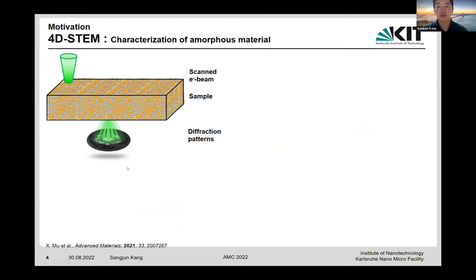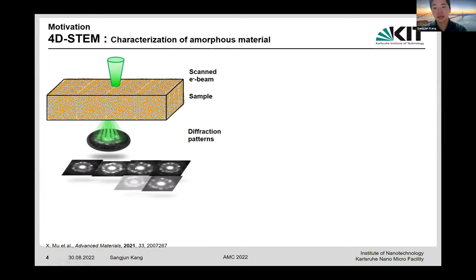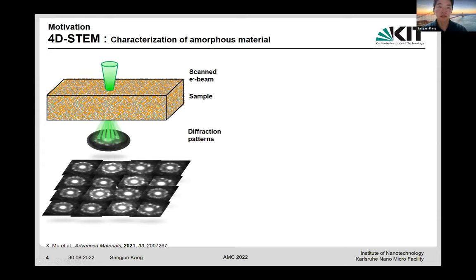We developed a four-dimensional STEM method to quantify the local structure of nanoglass. As shown in the schematic illustration, we use a convergent parallel electron probe focused on the local nano-volume with a probe size of roughly one nanometer. We obtain diffraction patterns from the nano-volume using a fast camera. The diffraction pattern of amorphous material is characterized by circular diffraction rings due to isotropic atomic arrangement. An array of diffraction patterns is acquired at each scanning position during step-wise scanning of the probe — this method is called 4D-STEM, referring to its typical dataset of two-dimensional diffraction images over a two-dimensional sample image position.